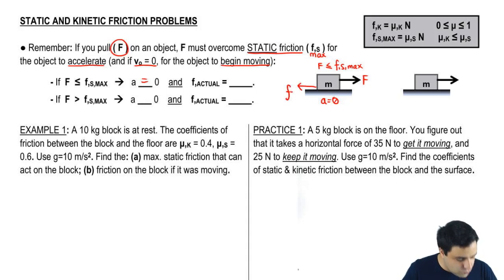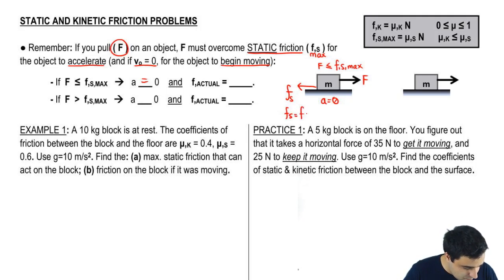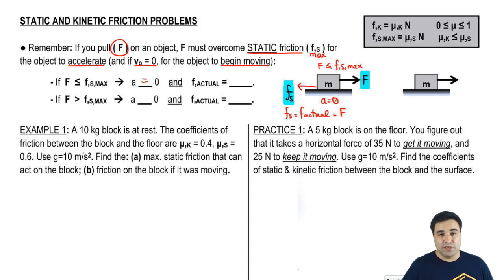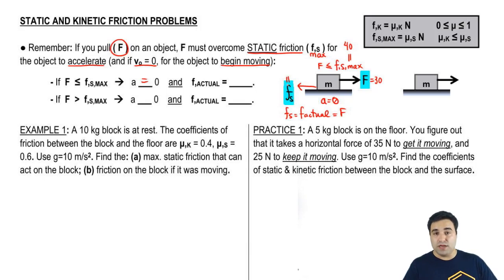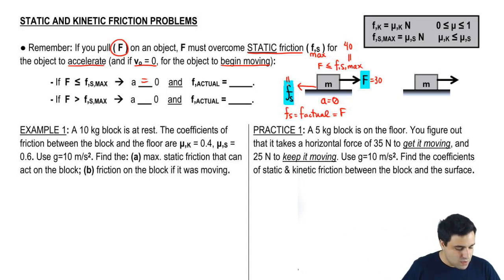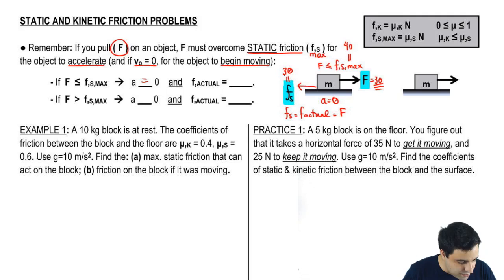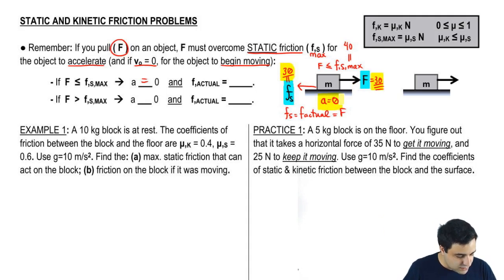Therefore, your actual friction, which will be static, will simply equal your F, because these two forces have to cancel for you to have an acceleration of zero. If your Fs max was 40 and I pull with 30, that's not enough. But friction cannot oppose me with 40, because then I'd have 40 to the left and 30 to the right, and the block would be moving towards friction — which makes no sense. Friction opposes me with just the amount of force I'm pulling with, so that the two forces cancel.